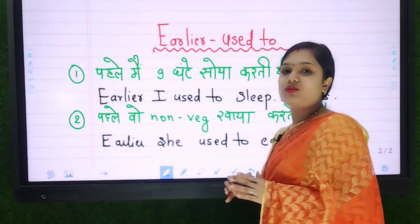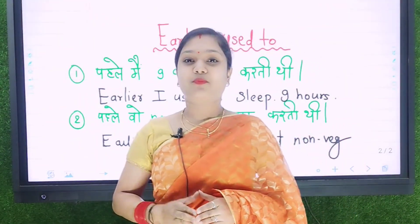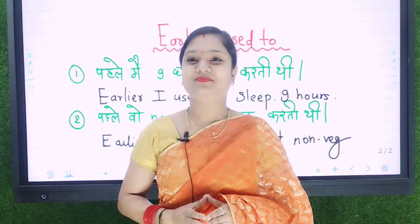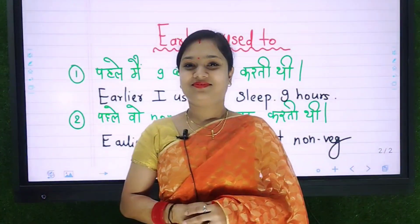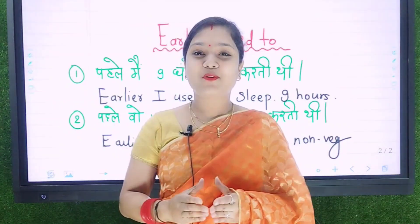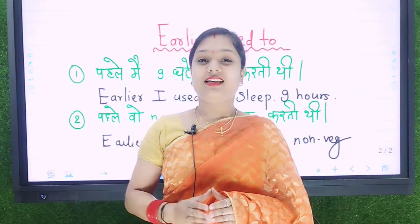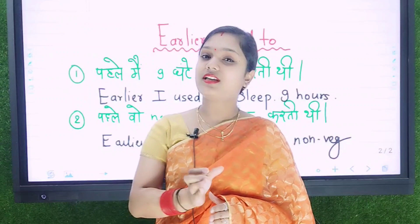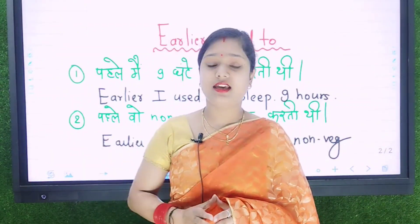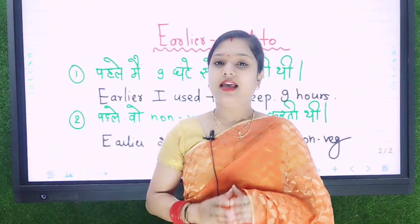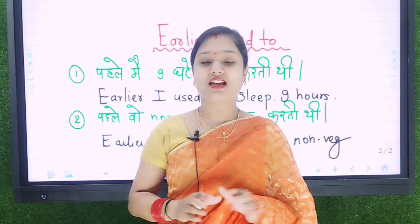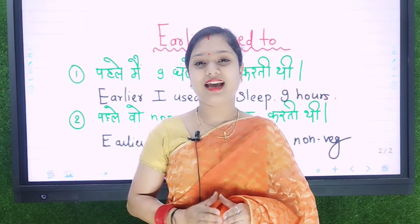अब आप भी कुछ sentences try कीजिए। अब रौशनी आएंगी और वो कुछ sentences try करेंगी। Earlier used to के साथ सिर्फ V1 ही लगाइएगा, और आप object लगा सकते हैं जो भी आपका है। अब आप इससे कुछ sentences try कीजिए और comment section में जरूर comment करके बताइएगा।